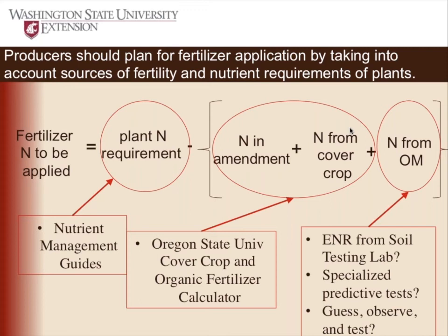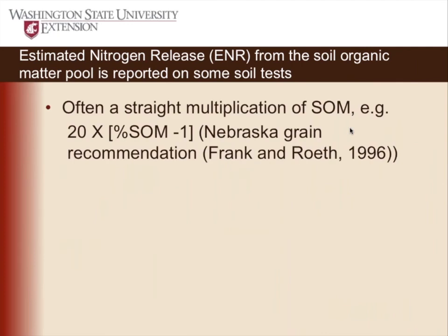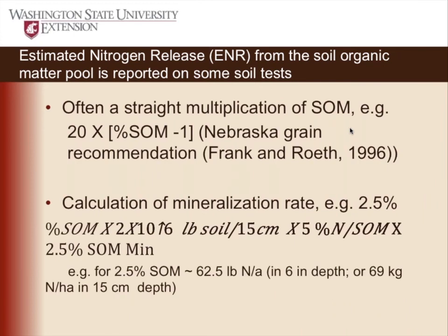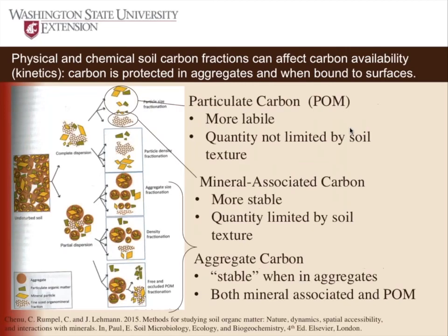Looking at estimated nitrogen release, it's usually just a straight multiplication of soil organic matter. For example, the Nebraska grain recommendation: 20 times the percent soil organic matter minus one — from the Brady and Weil soil science textbook. You take your percent organic matter, assume you can figure out how much carbon is in there, and then assume some mineralization rate. So if you had 2.5% soil organic matter, you'd come up with a contribution of 62.5 pounds of nitrogen per acre.